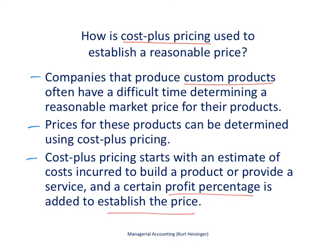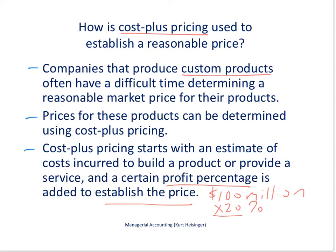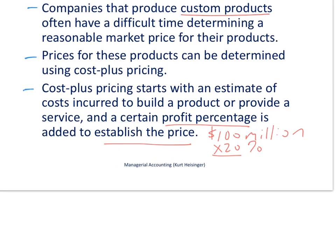So if it costs 100 million dollars to produce a jetliner — making up numbers here, but using a nice round number — and we're Boeing and we'd like to mark it up 20%, then we would take 100 million dollars times 20%. That gives us the markup of 20 million dollars, and therefore the price would be 100 million plus 20 million, or 120 million dollars.